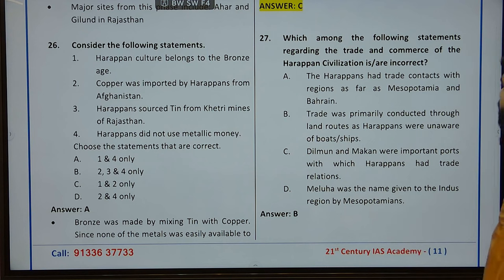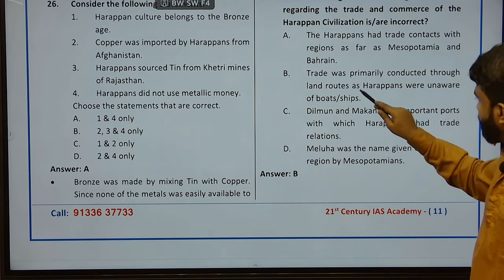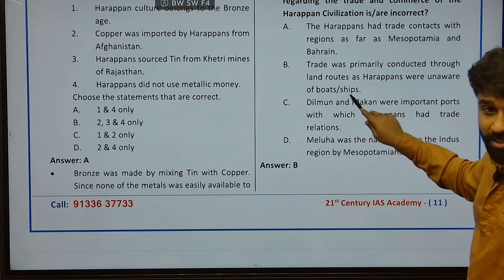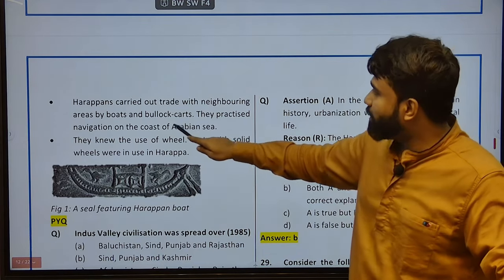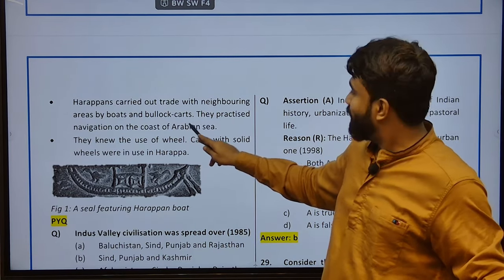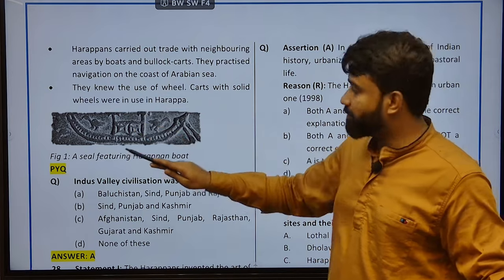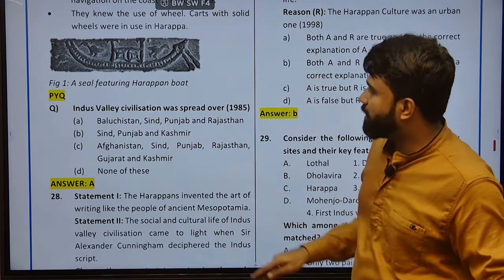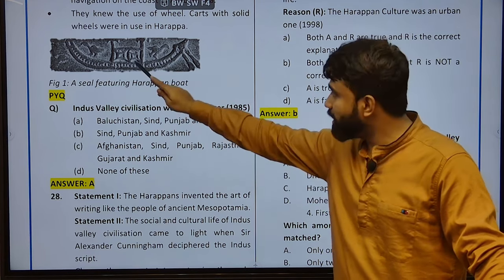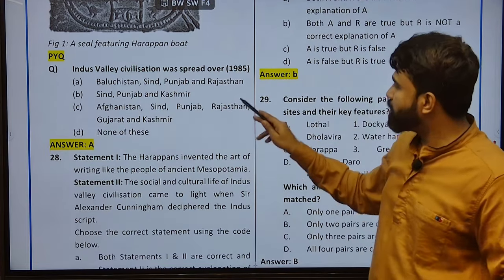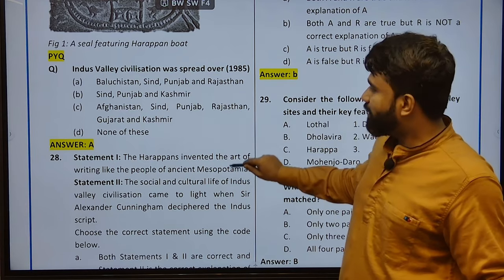Which among the following statements regarding trade and commerce of the Harappan civilization are incorrect? Trade was primarily conducted through land routes as Harappans were unaware of boats and ships — that is absolutely incorrect. They were aware of boats and ships. Harappans carried out trade with neighbouring areas by boats and bullock carts, and they practised navigation on the course of the Arabian Sea. Carts with solid wheels were also used in Harappan times. A seal featuring a Harappan boat is one great example.